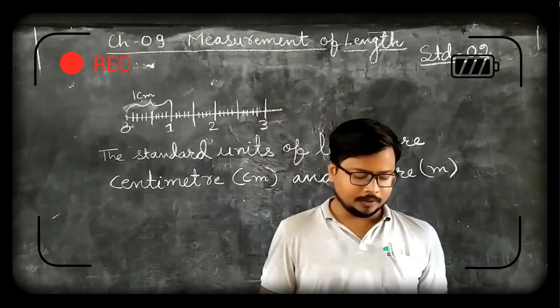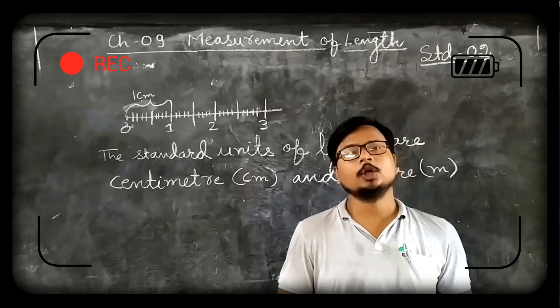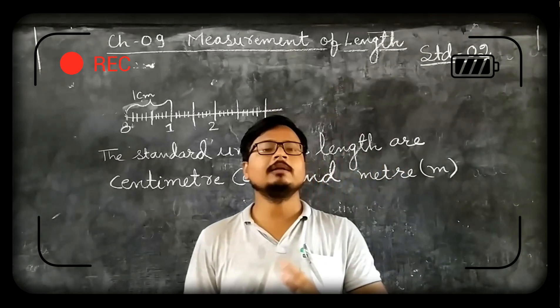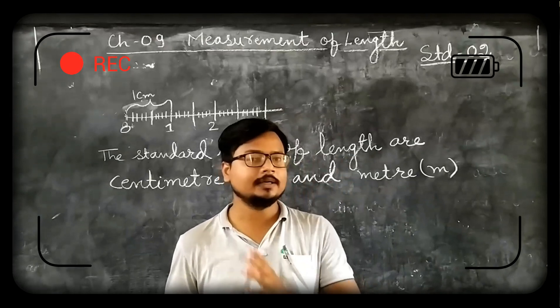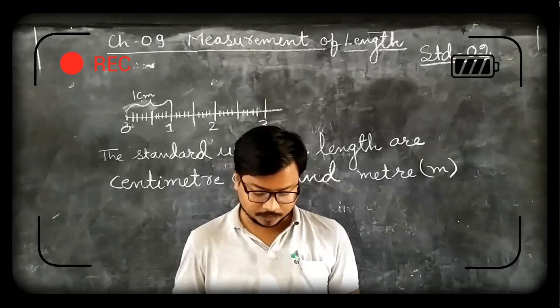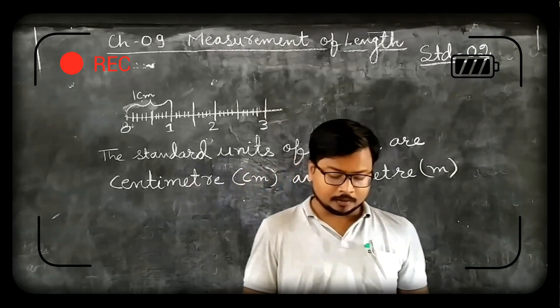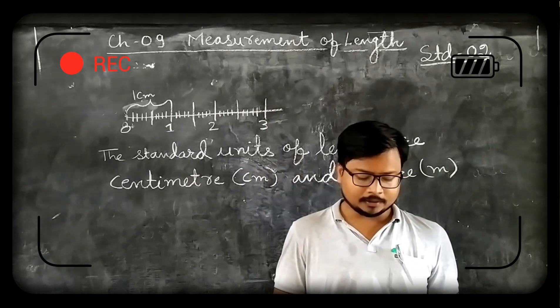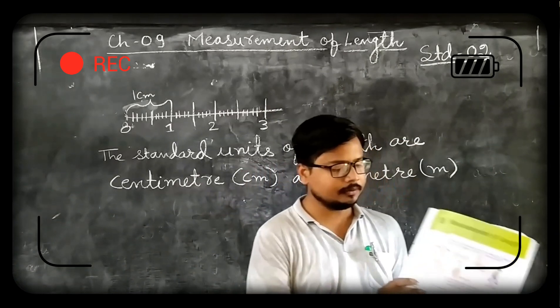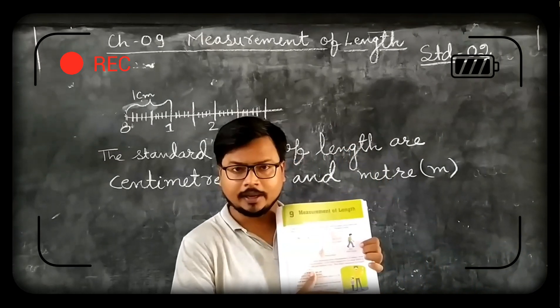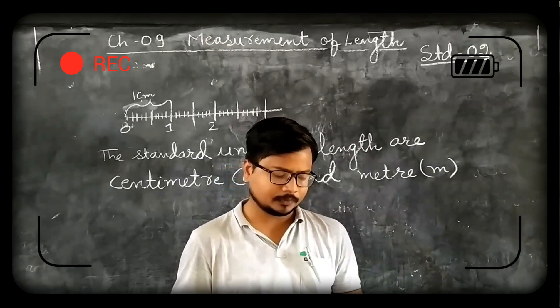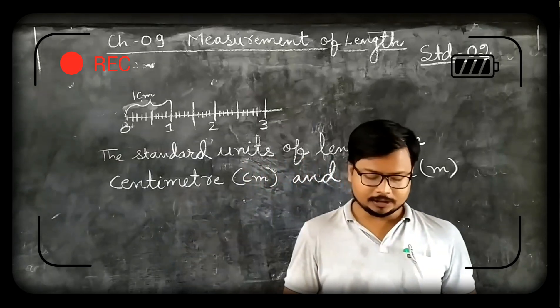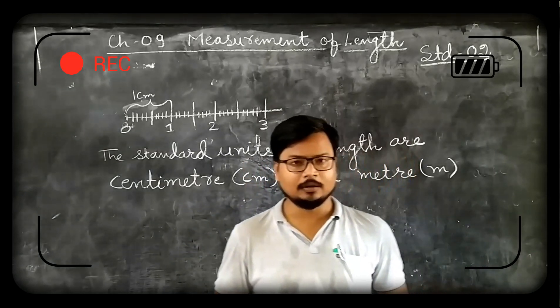Rahul's father made him stand against the wall and mark a line. As you can see here clearly these lines are marked. After that Rahul measured his height with his hand span.